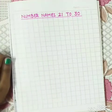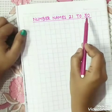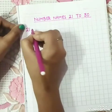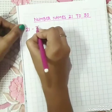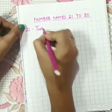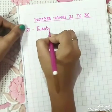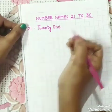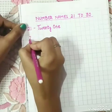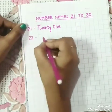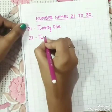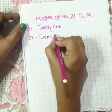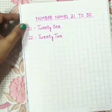Now children, let us learn how to write number names from 21 to 30. Let us start. 21 - spelling is T, W, E, N, T, Y, O, N, E - TWENTY ONE. 22 - spelling is T, W, E, N, T, Y, T, W, O - TWENTY TWO.